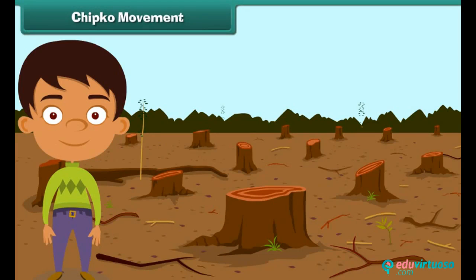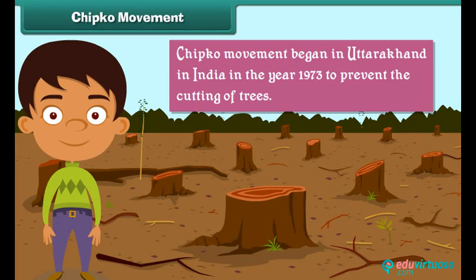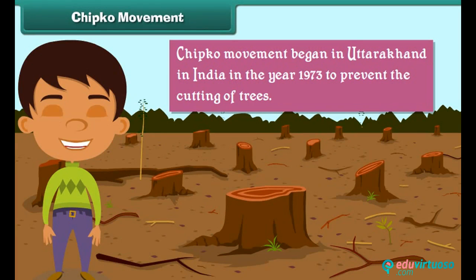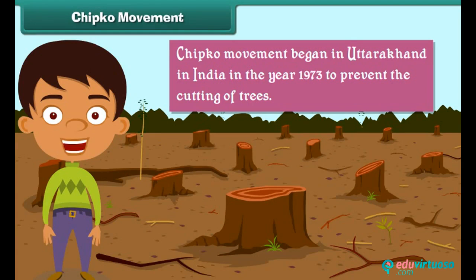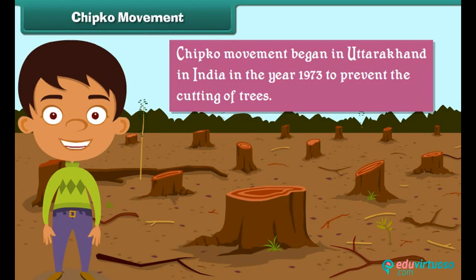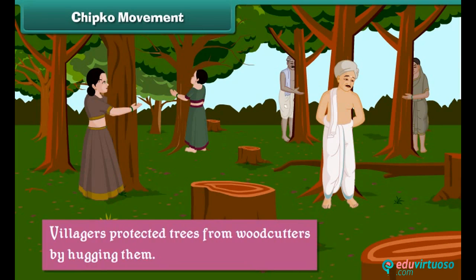Chipko movement. The Chipko movement began in Uttarakhand, India, in the year 1973 to prevent the cutting of trees. It was called the Chipko movement because during the movement, villagers protected trees from woodcutters by hugging them.